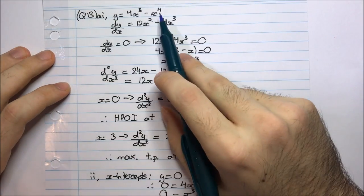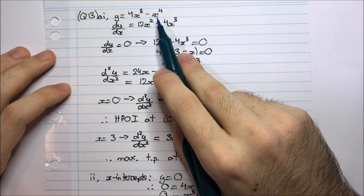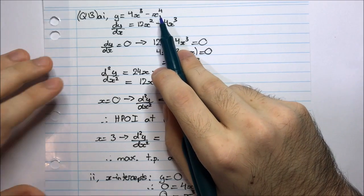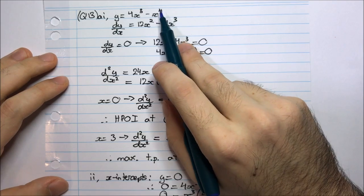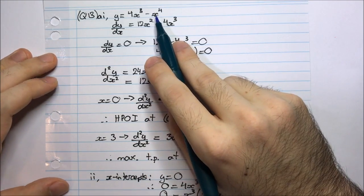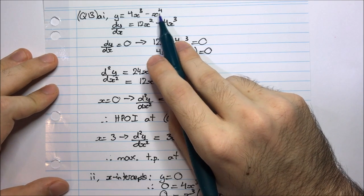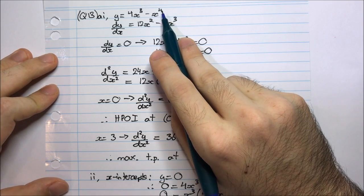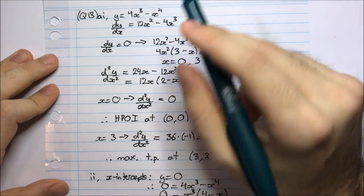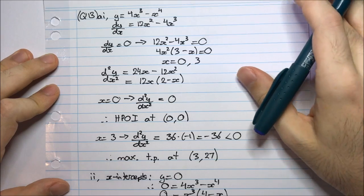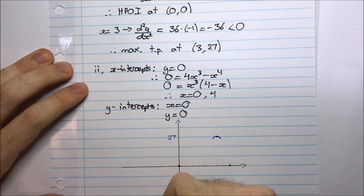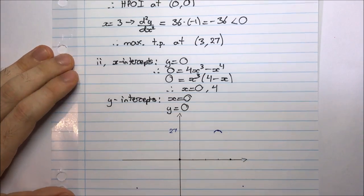For very large x values I'm somewhere very large in the negative direction. And what about substituting in a very large negative number? When x approaches negative infinity, the highest power dominates — x to the power 4. Since this is an even power, it becomes positive, but there's a minus out the front, so the entire thing is a very large negative number.